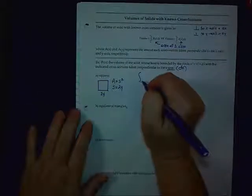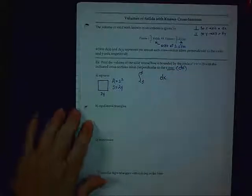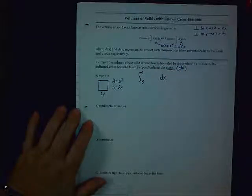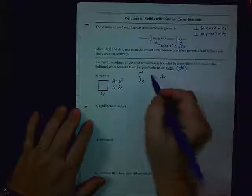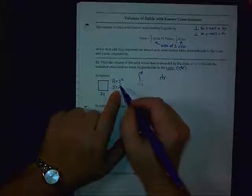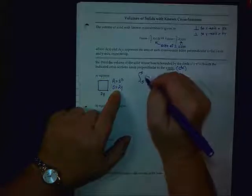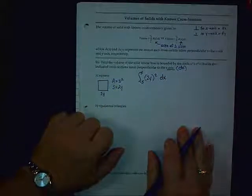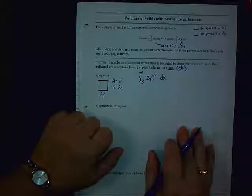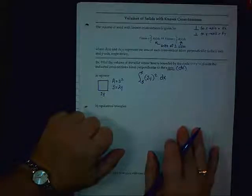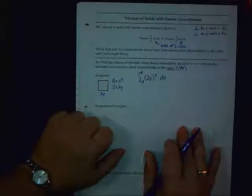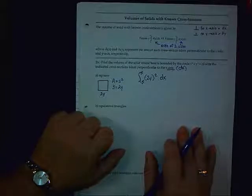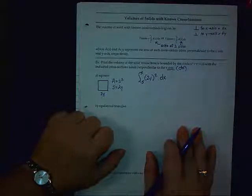So, this will go from negative 5 to positive 5. Okay. And then here goes the area formula substituting in what s is. So, this will be 2y the quantity squared dx. Do you understand how I got that? Anybody have a question? Please ask now. Okay.